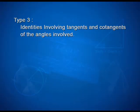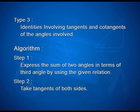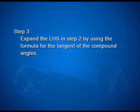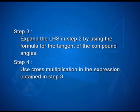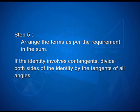Now taking Type 3 identities: identities involving tangents and cotangents. The algorithm: Step 1: express the sum of two angles in terms of the third using the given relation. Step 2: take tangents of both sides. Step 3: expand the LHS using the formula for tangent of compound angles. Step 4: use cross multiplication. Step 5: arrange terms as required. If the identity involves cotangents, divide both sides by the tangents of all angles.